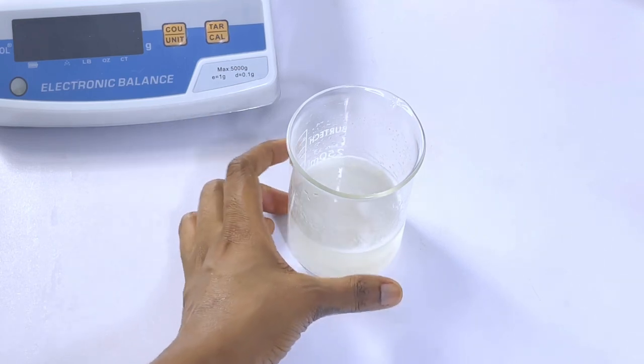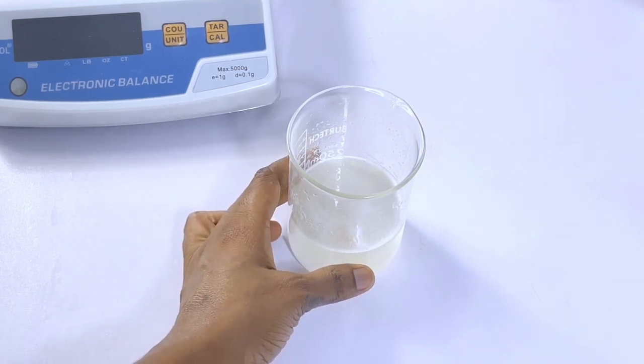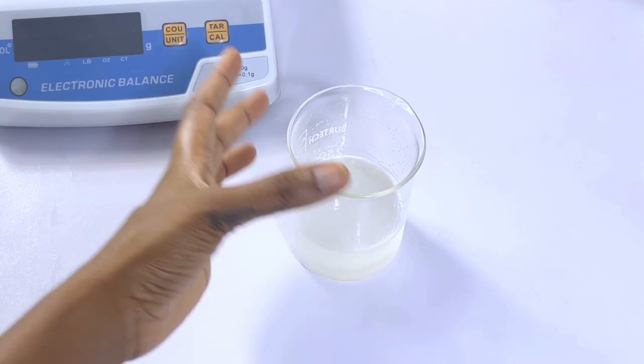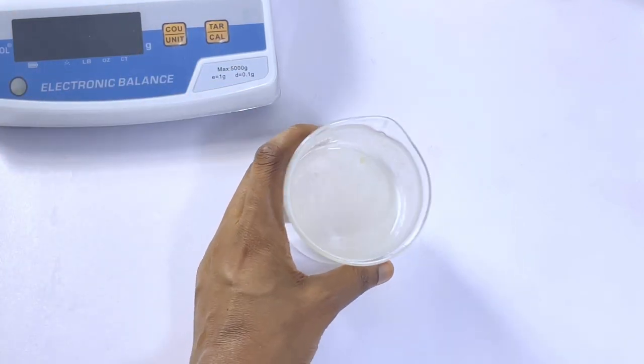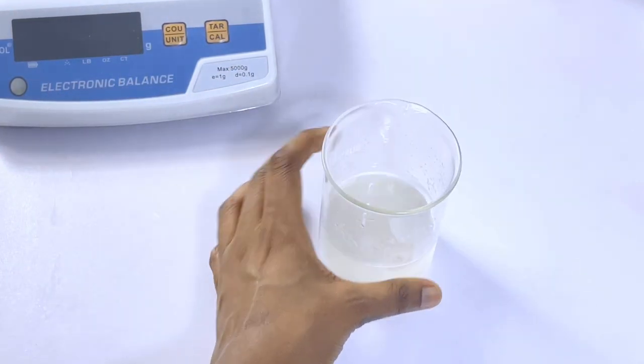Now if you don't have Silly Gel you can definitely use Carbopol, you can use xanthan gum, you can use guar gum, you can use any other gelling agent that you want to use. You can even use hyaluronic acid.